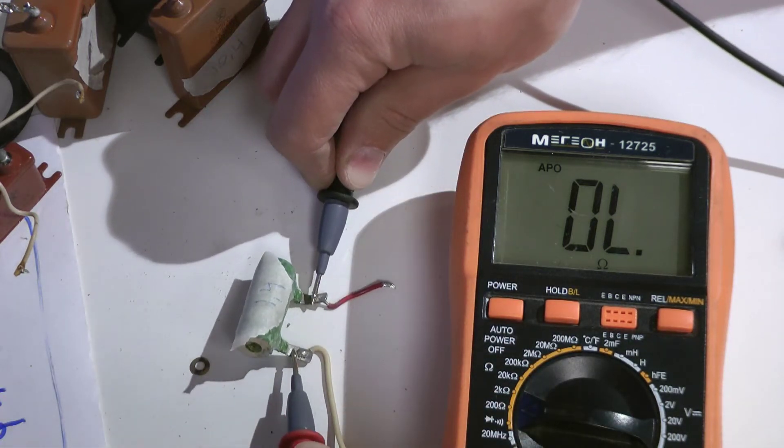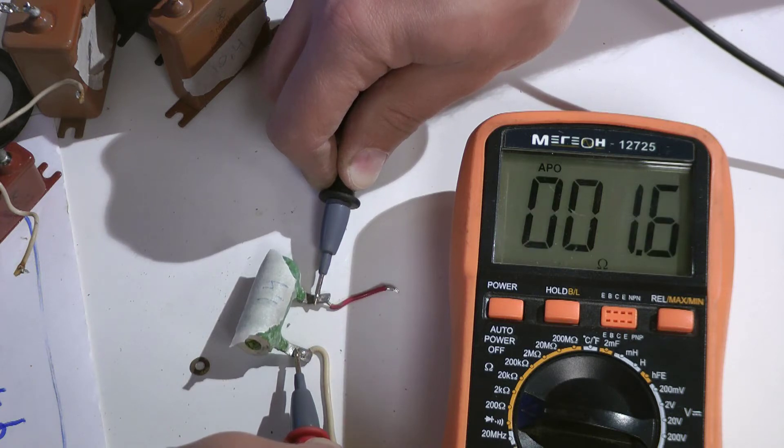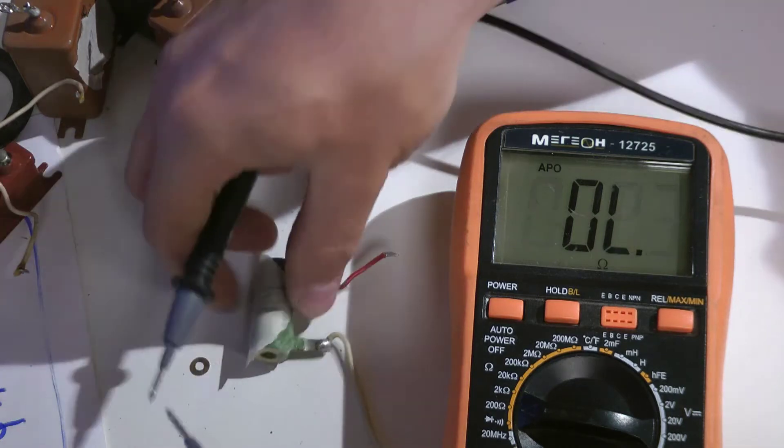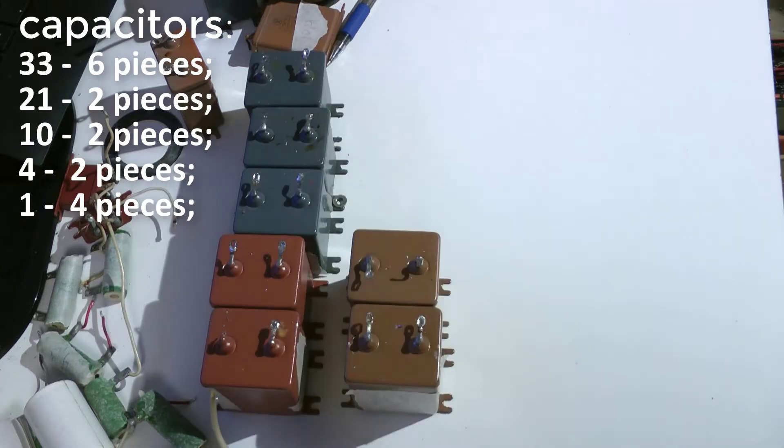I measure the resistors and also write down the exact value. Let's see the parts list. I recall the cost of all about $30.